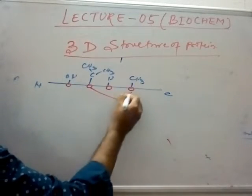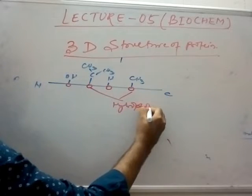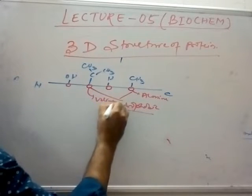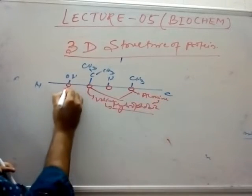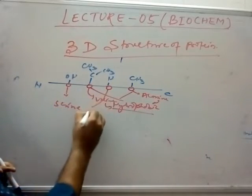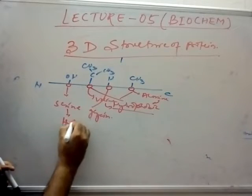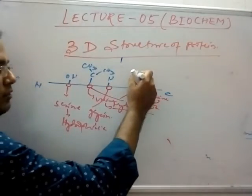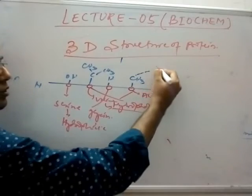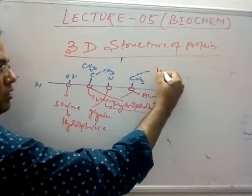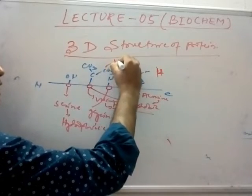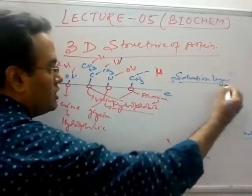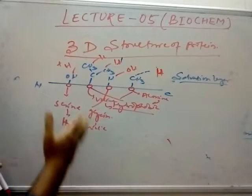These two amino acids — alanine — are hydrophobic, while serine is hydrophilic. Since the hydrophilic amino acids are exposed, they will interact with water molecules through H-bonding. This interaction is called solvation, which is an unfavorable interaction — water does not want to interact with these hydrophobic molecules.